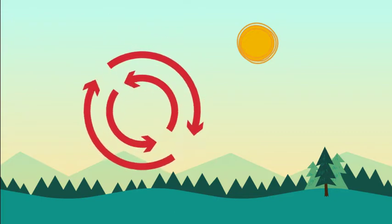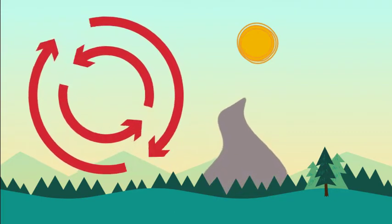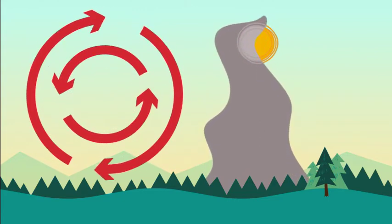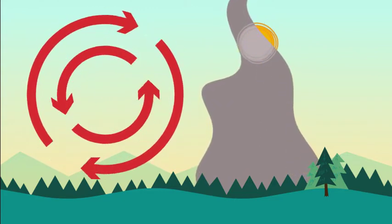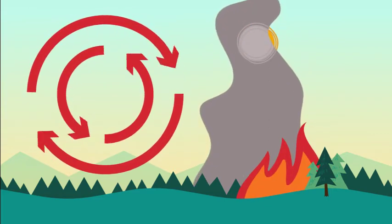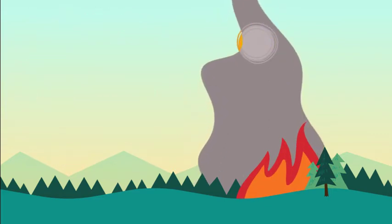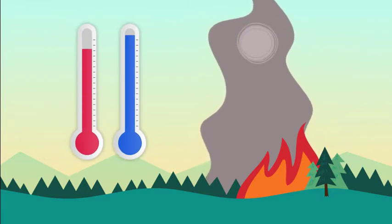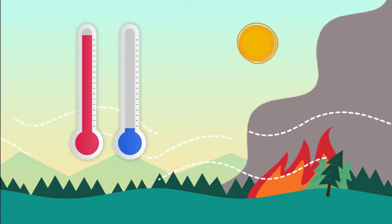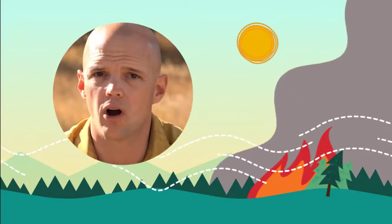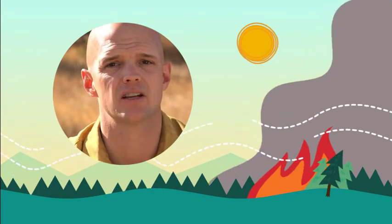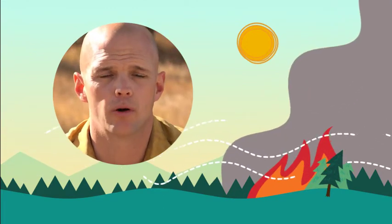Regardless of when the inversion breaks, air mixes well vertically and the mixing height can grow substantially in a short time. Large fire growth can happen quickly after an inversion breaks because surface temperature increases, relative humidity decreases, and winds may get gusty. Watch your smoke column in the mid to late morning — if it starts to reach much higher heights fast, the inversion has likely broken.